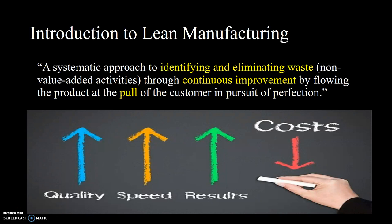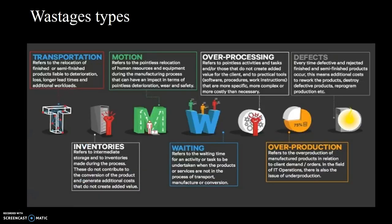Lean manufacturing is essentially about eliminating waste. First of all, we need to identify what is meant by waste and what are the types of waste so we can eliminate them. Waste means something that is not adding value to your product — that is called waste.